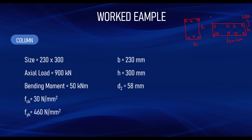We can now determine d2. Using a cover of 40 mm, links diameter of 10 mm, and a bar size of 16 mm (minimum size for columns), d2 equals 40 + 10 + 16/2 = 40 + 10 + 8 = 58 mm. Therefore d2 over h equals 58 divided by 300, giving us 0.2.